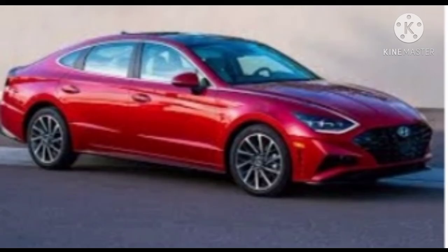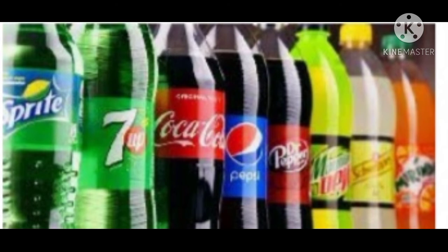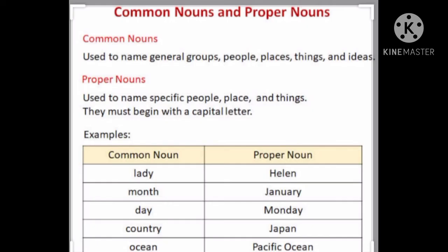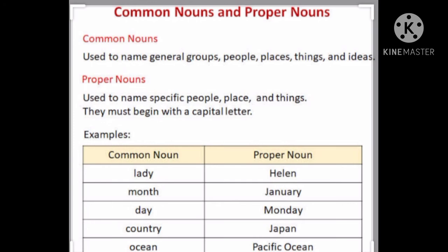Examples of common noun are like car — koi bhi ho sakti hai — and cold drink, bahoot saari hoti hain, toh those are common nouns. Now, difference between common noun and proper noun: common noun is used to name general groups, people, places, things or ideas — jho generally hum use karte hain. That is common noun. And proper nouns are used to name specific people, persons and things — kisi particular person aur place ki baat karein ge, toh that is proper noun.